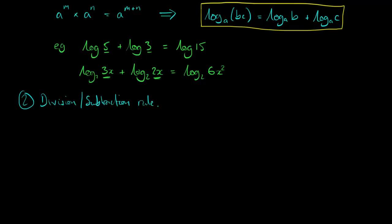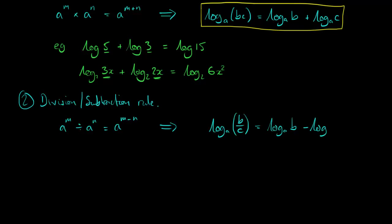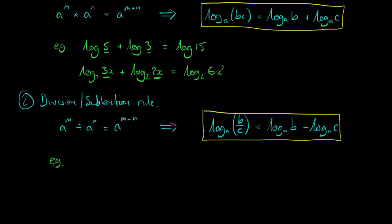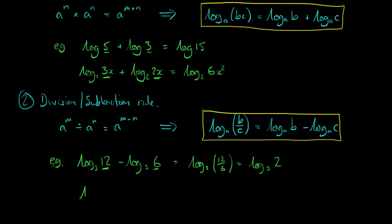The second law links division within a logarithm to subtraction of two logarithms, based on the corresponding law of indices. The log of b divided by c is simply equal to the log of b minus the log of c, as long as you use the same base throughout. For example, log base 3 of 12 minus log base 3 of 6 — by this rule we do 12 divided by 6 inside the logarithm, giving log base 3 of 2. Going the other way, log of x divided by 100 equals log of x minus log of 100.